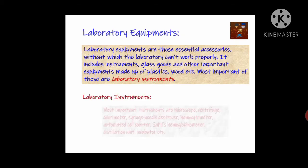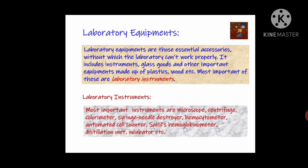Laboratory instruments are the most important equipments. These include microscope, centrifuge, colorimeter, hemocytometer, automated cell counter, and so on. These are the minimum required laboratory instruments to run a laboratory properly. There are many different types of hematological instruments available, but these are the minimally required ones to run a hematology laboratory.